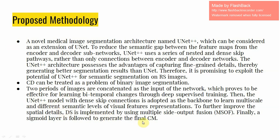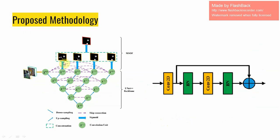To further improve spatial details, deep supervision is implemented using multiple side output fusion, and finally a sigmoid layer is applied to generate the final change map. This is the proposed UNet++ architecture used in this paper. The UNet++ architecture with nested dense skip pathways has great benefit for extracting multi-scale feature maps from multi-level convolutional pathways. A normal UNet++ architecture consists of convolutional units, down-sampling units, up-sampling modules, and skip connections between convolutional units. The most significant difference between UNet++ and UNet is the redesigned skip pathways, which adopt the same dense connection strategies as DenseNet.